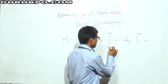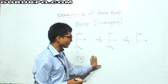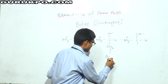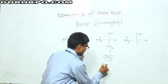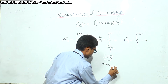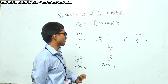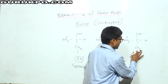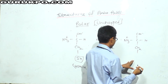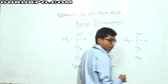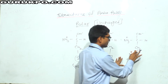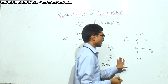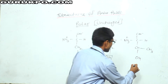This is again the structure of alanine. If I replace one hydrogen with an OH (hydroxyl) group, then I will get serine. Similarly, this is alanine — if I replace one hydrogen with an OH group and additionally a CH3 group, then I will get threonine.